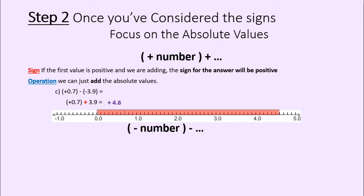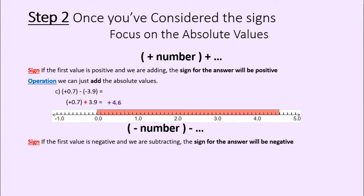What about if we start with a negative number and subtract from it? The sign would have to be negative — there is no way to turn a negative number into a positive by subtracting more away from it, so the sign will always remain negative. What about the operation? If you have a negative number and you subtract from it, it's going to get more negative. So ignoring the signs, we add our absolute values because the distance from zero in the negative direction is getting greater.